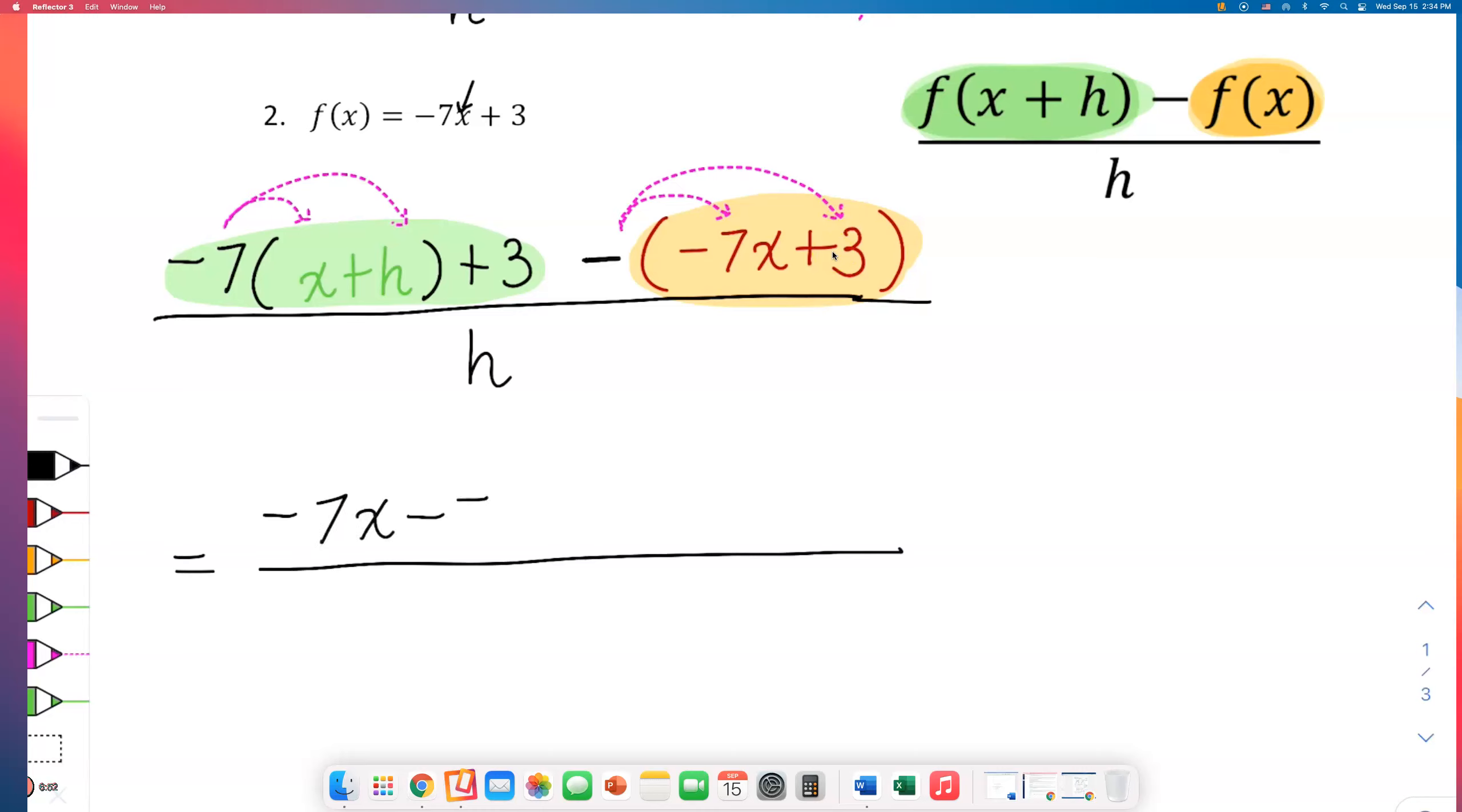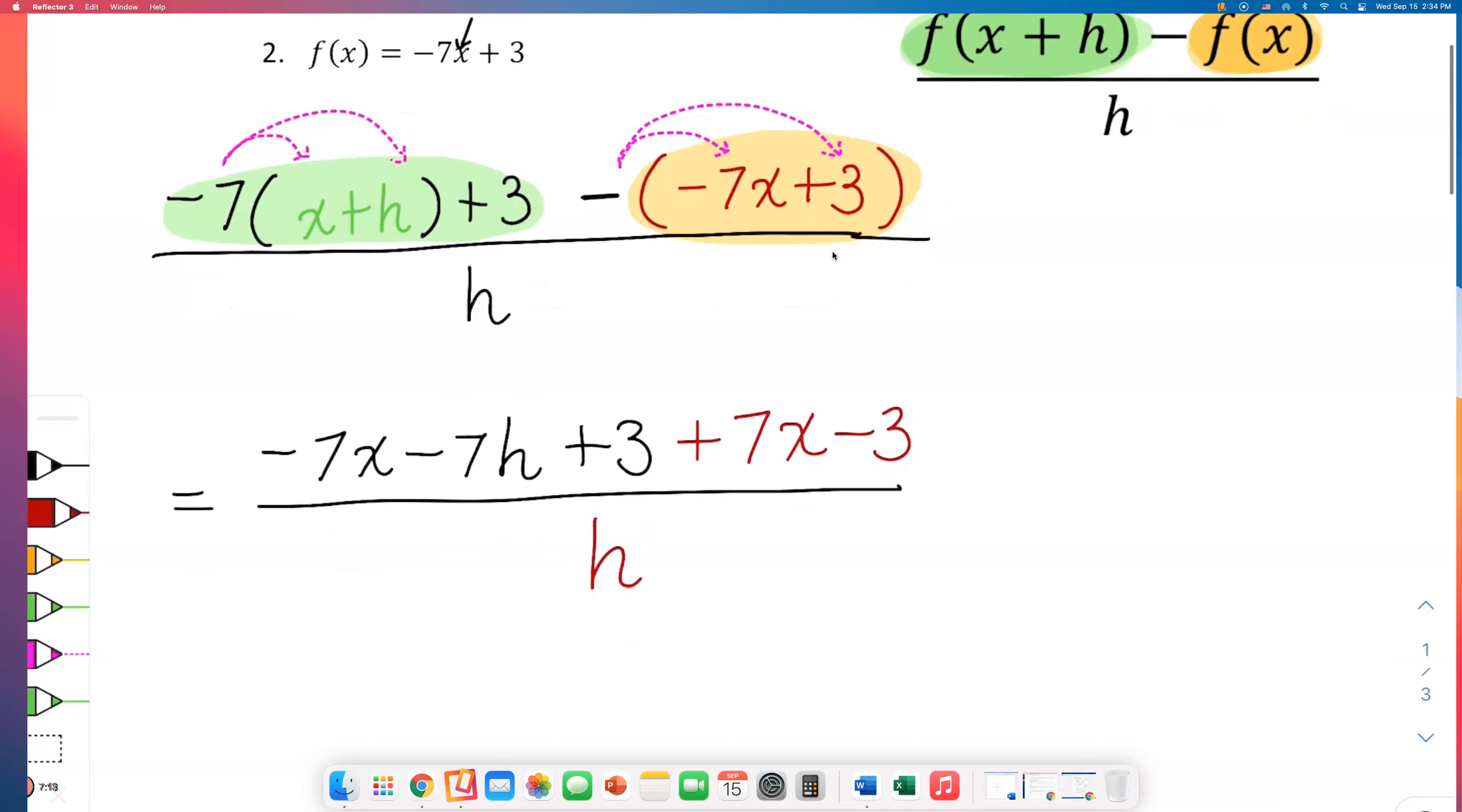Distribute on the numerator: negative 7x minus 7h from distributed property. Bring down the plus 3. Then distributing this negative sign, we're gonna have positive 7x, and minus times positive 3 gives me minus 3, all over h.